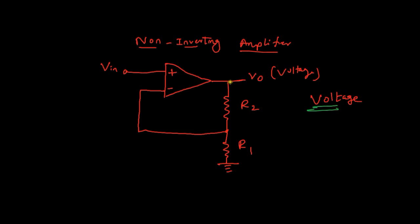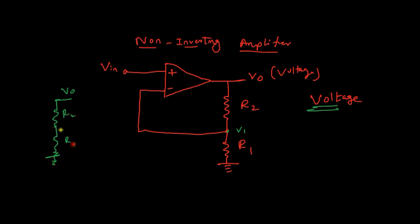Once we have extracted the voltage, it gets divided across the two resistors R2 and R1. So there is a voltage here — let's call it V1. As you can see, there is the output and two resistors R2 and R1. V1 is equal to V0 times R1 divided by (R1 + R2).